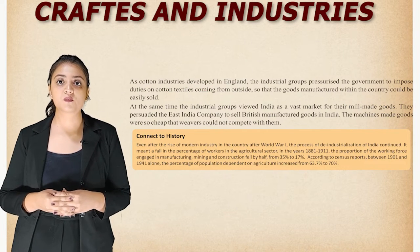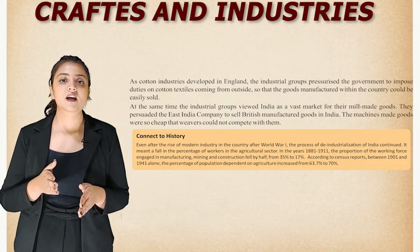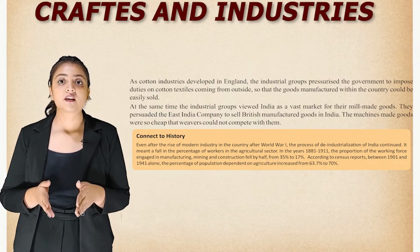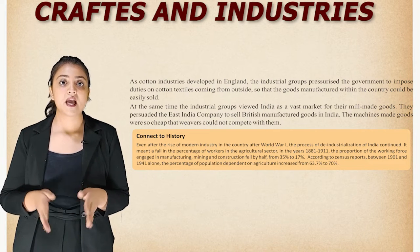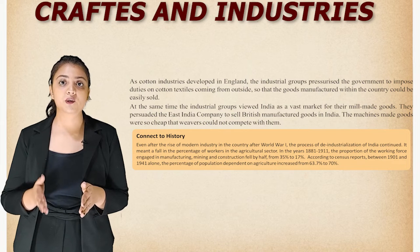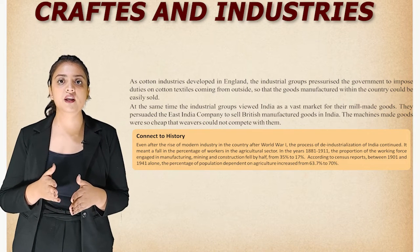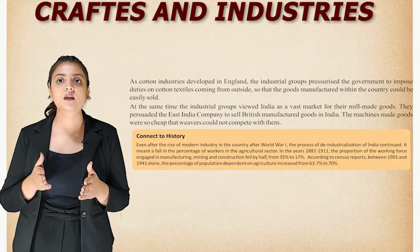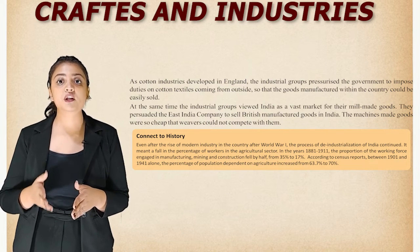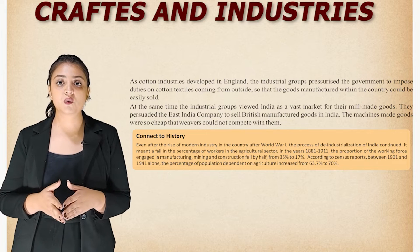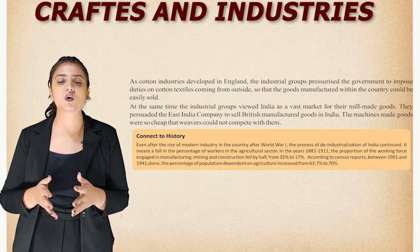As cotton industry developed in England, industrial groups pressurized the government to impose duties on cotton textiles coming from outside, so that goods manufactured within the country could be easily sold. At the same time, industrial groups viewed India as a vast market for their mill-made goods. They persuaded the East India Company to sell British manufactured goods in India. The machine-made goods were so cheap that weavers could not compete with them.